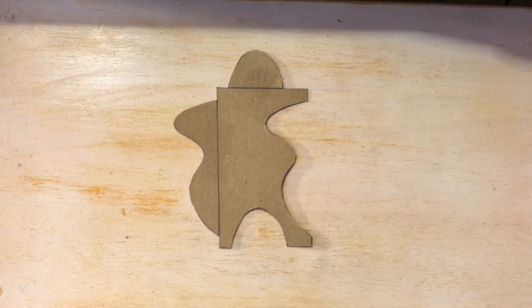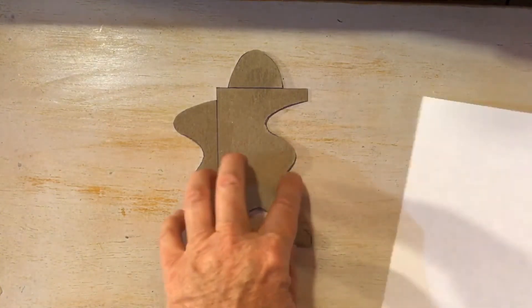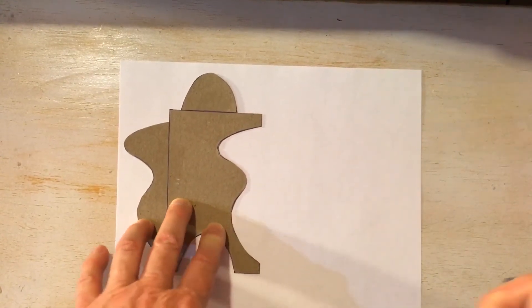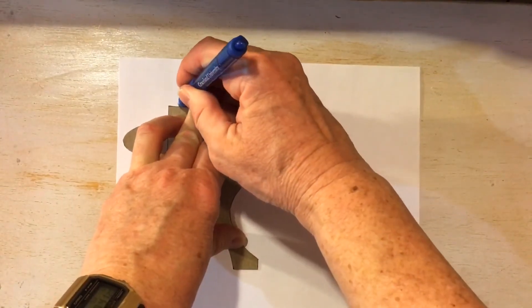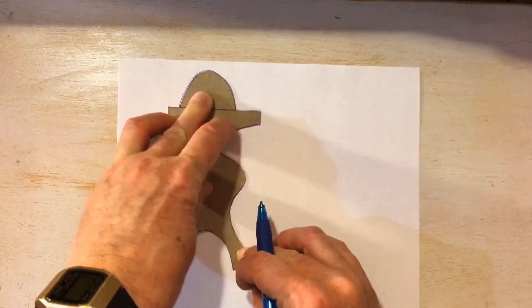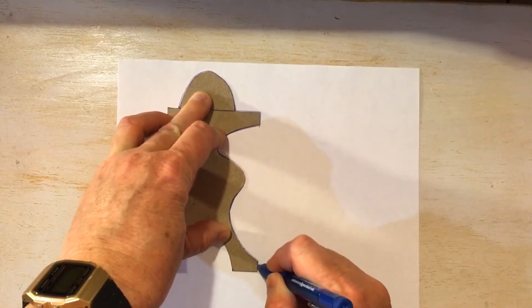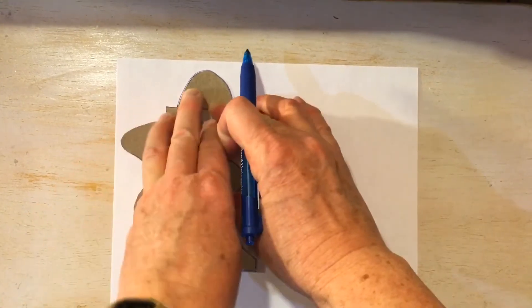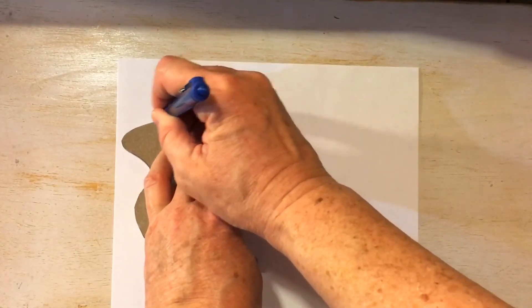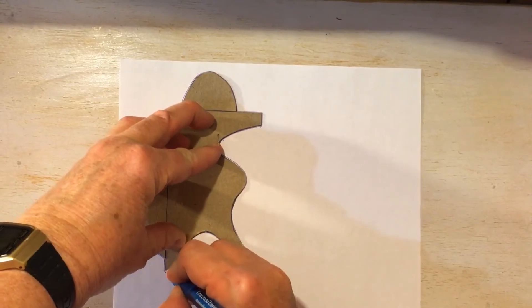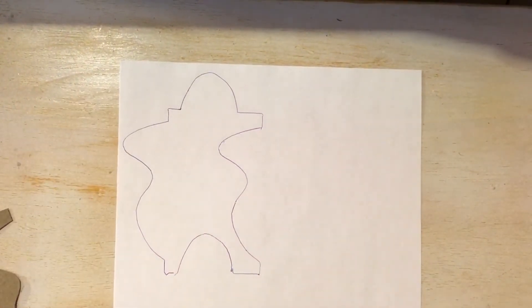I'm going to get my piece of paper and I'm going to start tracing my space alien and we're going to make multiples of this. Just trace around it holding it as still as you can and making sure that you get all parts traced. There it is.